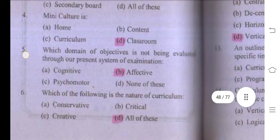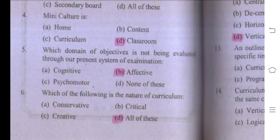Number five: which domain of objectives is not being evaluated through our present system of examination? The right answer is the affective domain. Number six: which of the following is the nature of curriculum? Options conservative, critical, and creative theory are all correct, so the right answer is D — all of these.